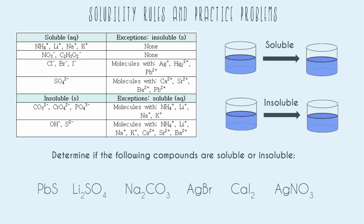Let's go over the definitions of soluble and insoluble. What we're talking about is dumping usually some type of powder or crystal in water, stirring it around, and asking: does it dissolve? For things that are soluble, that means it does dissolve. If we have a little pile of salt or sugar and we put it in water and stir, it's all going to dissolve, and the water is just going to look clear — there won't be any particles in it.